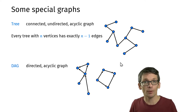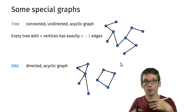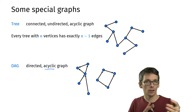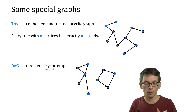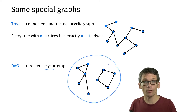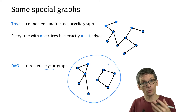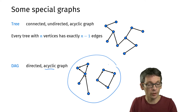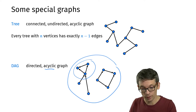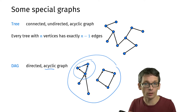Another special type is a directed acyclic graph, or DAG. This is in the directed graph setting and we want it to be acyclic, but we are not asking about connectivity. This example of a directed acyclic graph doesn't look like a tree, but there is no cycle — from a given node I cannot follow edges and return to the same node.